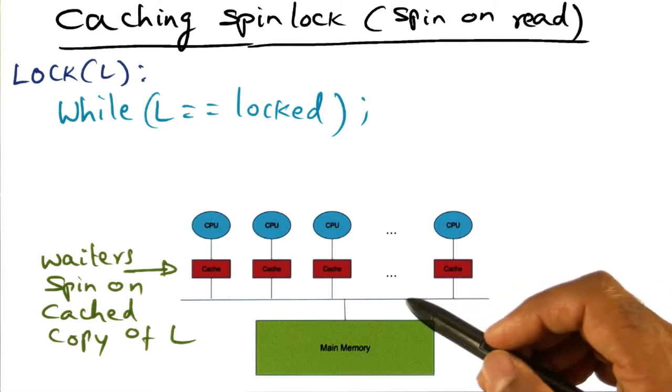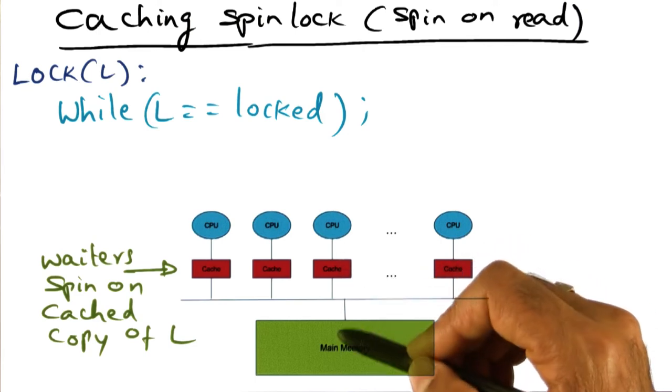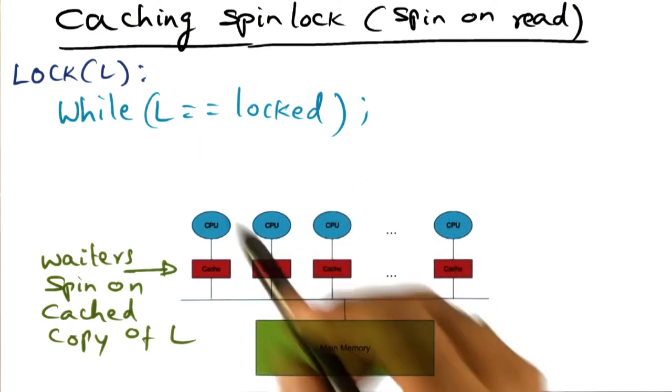And so if there is one processor that's actually doing useful work and it has to go to memory, it's not going to find that to be a problem. No contention on the network from the waiting processes because of this.